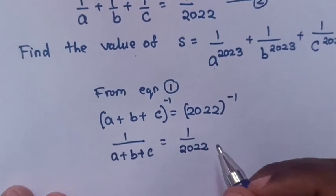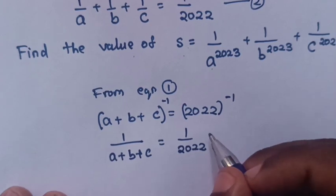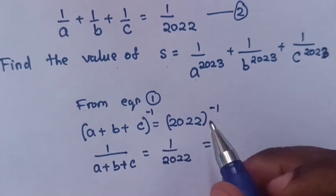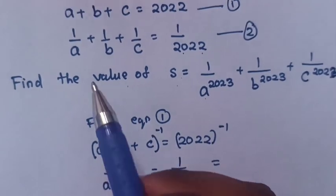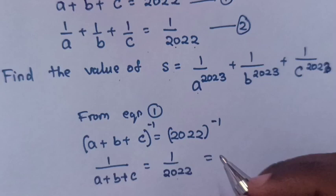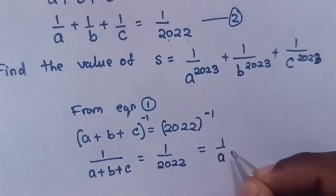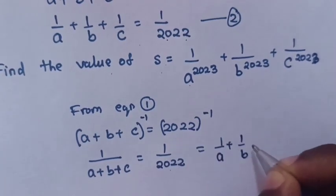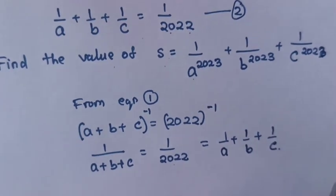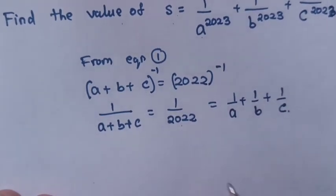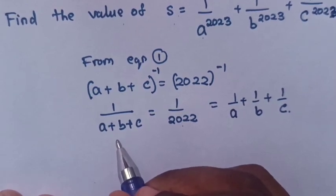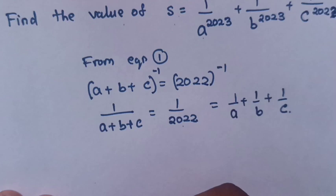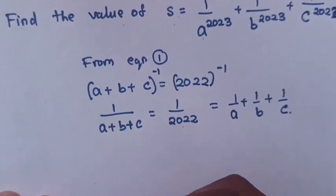Now, 1 over 2022 is the same as in equation 2, which is 1 over A plus 1 over B plus 1 over C. So we have 1 over (A plus B plus C) equals 1 over A plus 1 over B plus 1 over C.